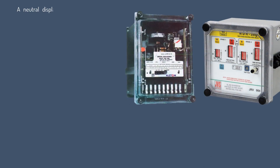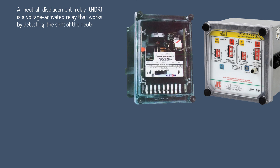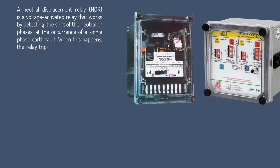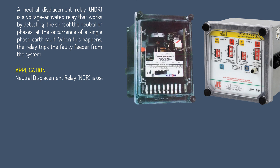A Neutral Displacement Relay (NDR) is a voltage-activated relay that works by detecting the shift of the neutral off-phases at the occurrence of a single-phase earth fault. When this happens, the relay trips the faulty feeder from the system. NDR is used for protection of motors, generators, and capacitor banks.